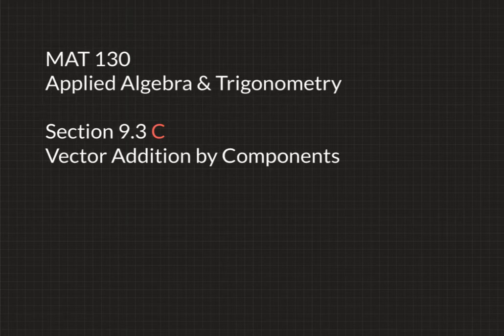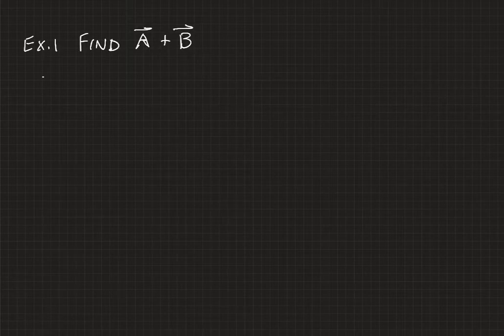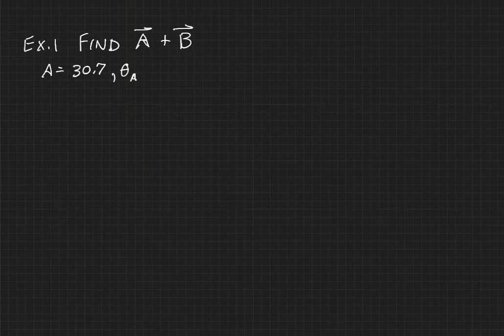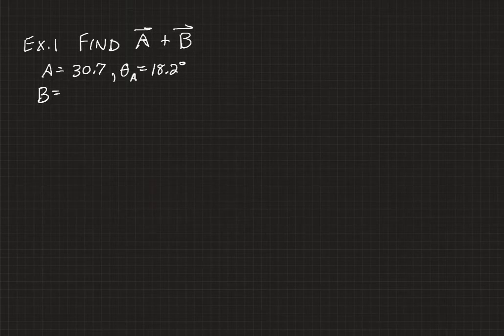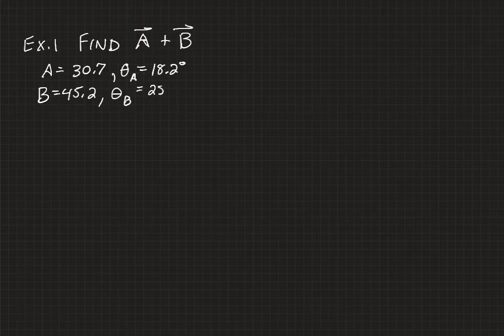Welcome back for some more discussion of vector addition by components. Here's our first example for this video. We are going to be finding the sum of two vectors, vector A and vector B, and so the sum would be the addition of those two. Vector A has a magnitude of 30.7 with a standard angle of 18.2 degrees. Vector B has a magnitude of 45.2 with a standard angle of 251.0 degrees.